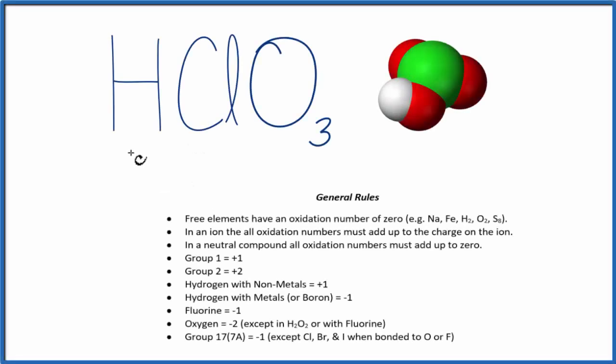In this video, we'll find the oxidation numbers for each of the elements in HClO3, that's chloric acid. So the white is the hydrogen, the green is the chlorine, and the reds are the oxygen atoms.